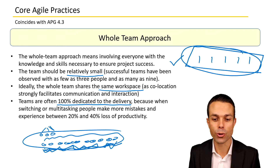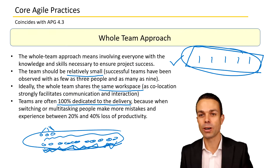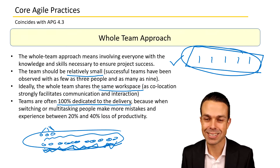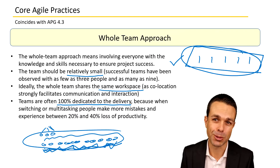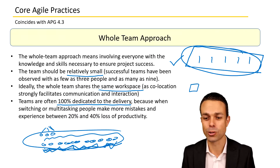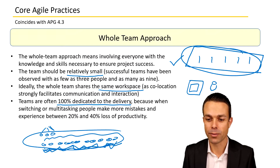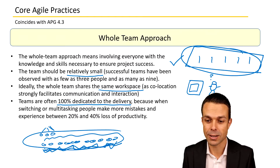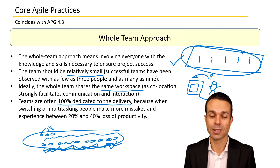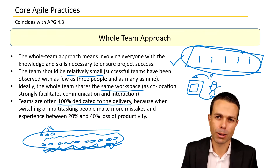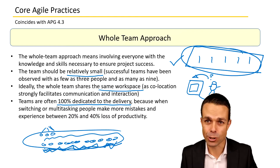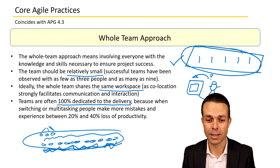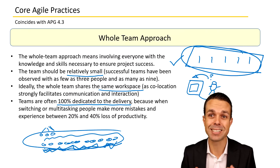Teams are often 100% dedicated to the delivery as well. It's been shown that when you're switching tasks or multitasking, people actually make more mistakes. Studies have proven that people lose productivity of between 20 and 40%. If you're working really hard concentrating on something and someone comes over and asks a complex question, you have to answer it and then go back to the task, winding up again, remembering where you were. George RR Martin famously rereads his entire manuscript before he starts writing again just to get completely up to speed. The loss of productivity is huge.